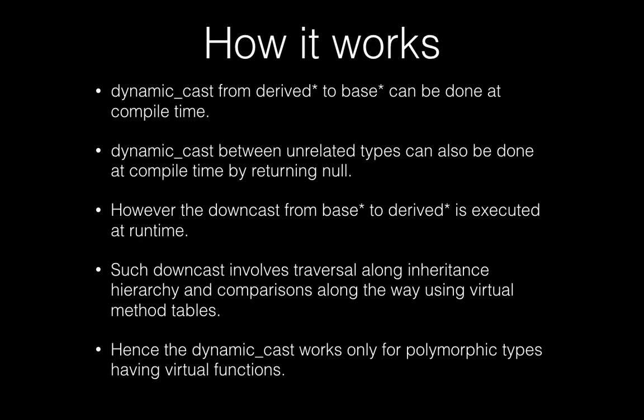Let's see how dynamic cast actually works. When used for a derived class pointer to base class pointer, it can be resolved at compile time because it should always work. Similarly, for unrelated types with no relation, it can be resolved at compile time because it should always fail, returning null. However, the down cast from base class pointer to derived class pointer is executed at runtime. That is the trickier part — it involves traversal around the inheritance hierarchy and string comparisons along the way using the virtual method tables. Type info is available, and virtual method tables are used to find out the actual dynamic type of the given pointer.